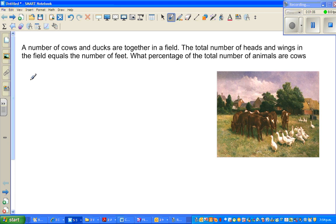Let us make up some columns. Suppose this is cow or cows. Then you've got ducks. Then you've got total number of head plus wings. So I'll write only H plus W. H stands for head and W stands for wings. And the final is feet.